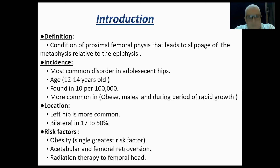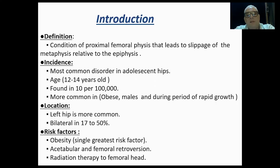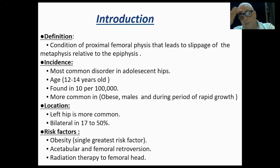The incidence: it is the most common disorder in adolescent hips. The most common age is 12 to 14 years, with an incidence of about 10 per 100,000. It is more common in the obese, in males, and during the rapid growth spurt part of their life. The left hip is more commonly affected, and it is bilateral in 17 to 50% of cases.